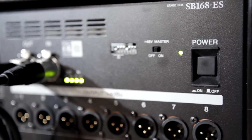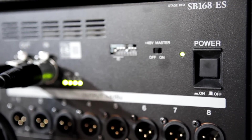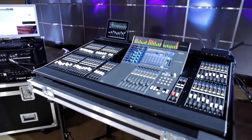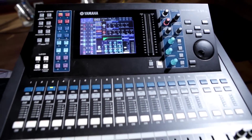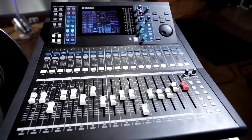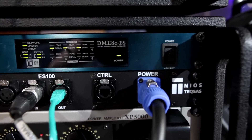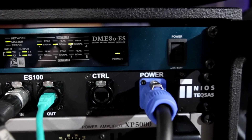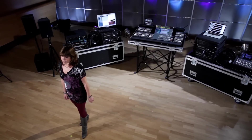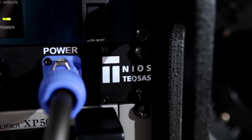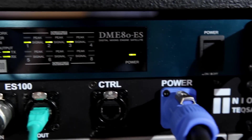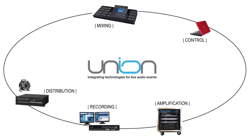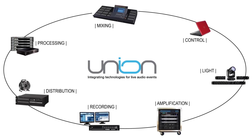In this example, we use Ethersound to link some SB168ES stage boxes to the front-of-house mixer M7CL48ES. We could add a separate monitor console such as the LS9 equipped with an Ethersound card, then add an amp rack including a Yamaha Ethersound DME to provide speaker processing — we call this type of rack NEOS, Networked Integrated Output System. All the components are now connected in a CAT5 ring; add an Ethernet switch or two so that Waves SoundGrid plugins can be used.